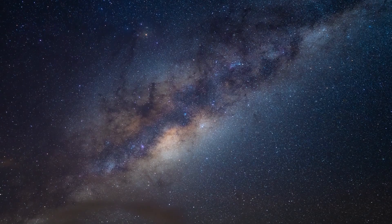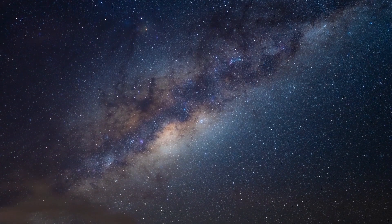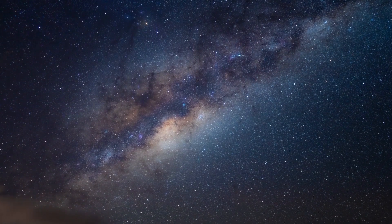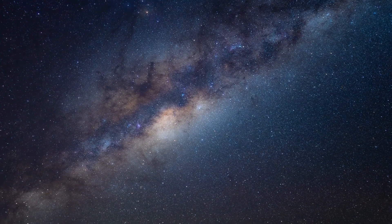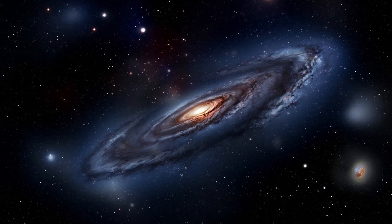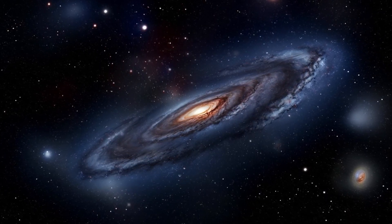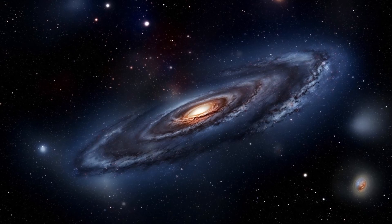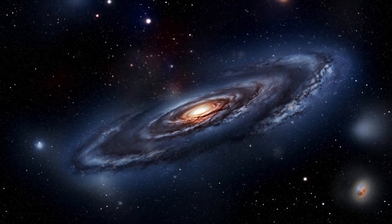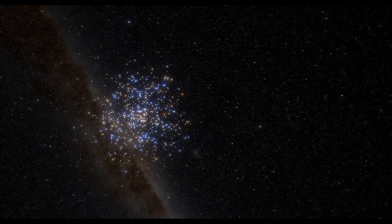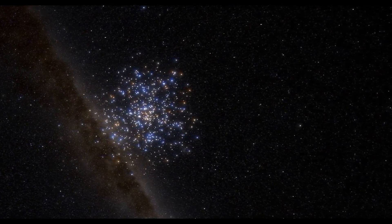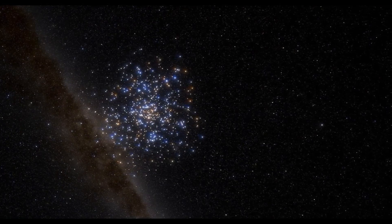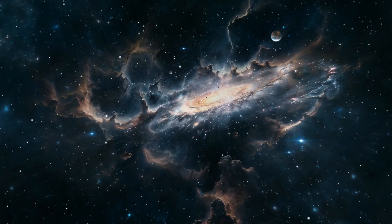But with advancements in technology, direct imaging of exoplanets is now possible. For an exoplanet to be directly imaged, it must be large enough to be seen by the telescope, far enough from its host star not to be obscured by its glare, and sufficiently young to be hot and visible from Earth. These requirements limit the number of exoplanets that can be directly imaged, yet they provide a fascinating glimpse into the characteristics and composition of these distant worlds.